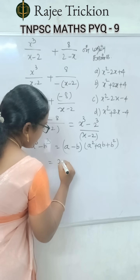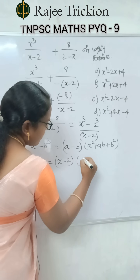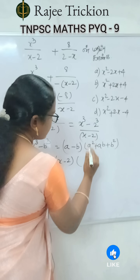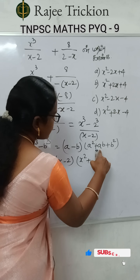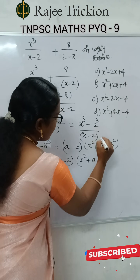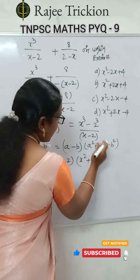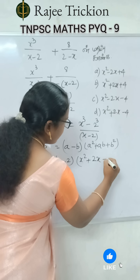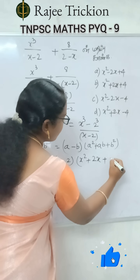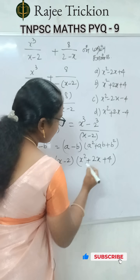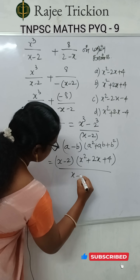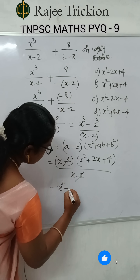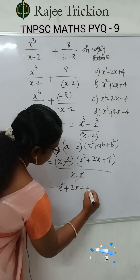So we factor: x minus 2, divided by x minus 2, times x² plus — with a value x and b value 2 — so 2x plus b², which is 2² equals 4. So we have x² plus 2x plus 4, divided by x minus 2. The x minus 2 terms cancel.